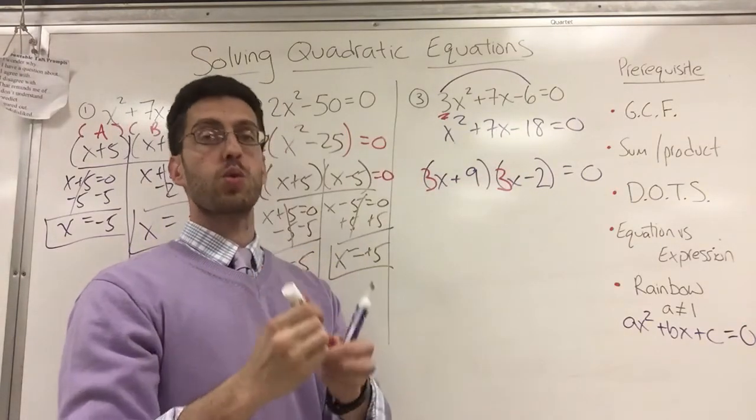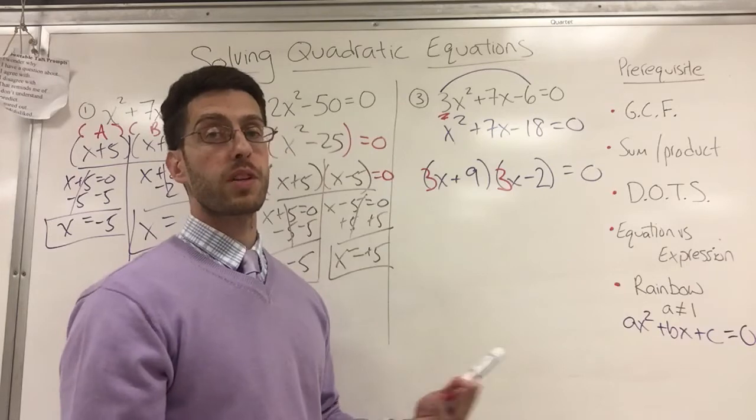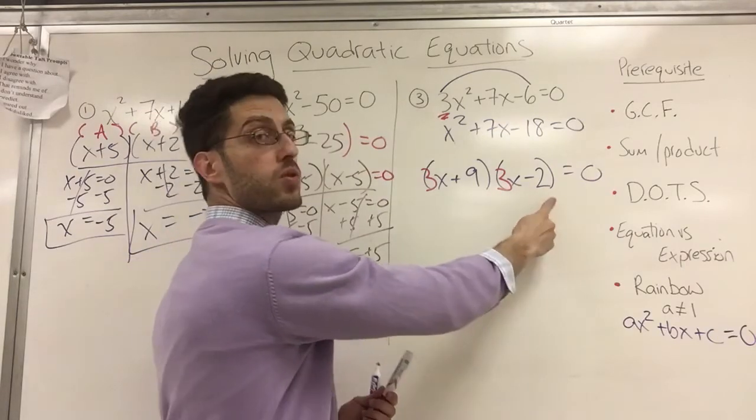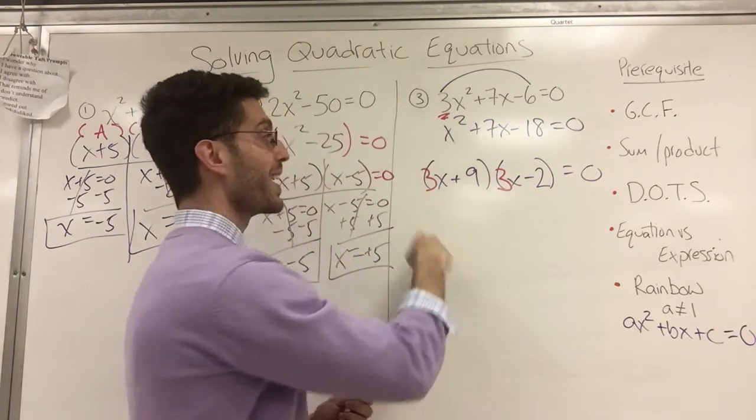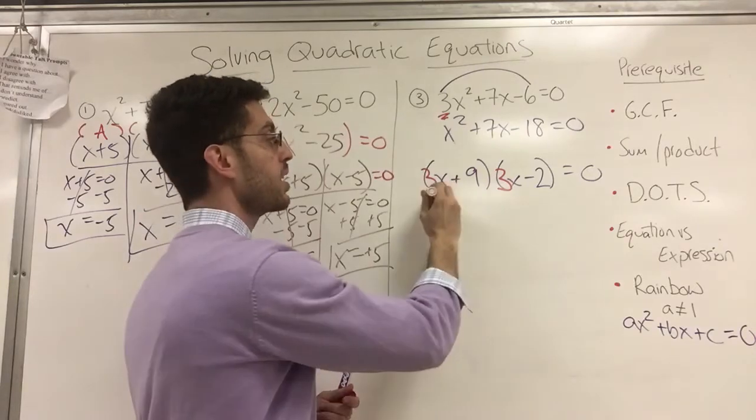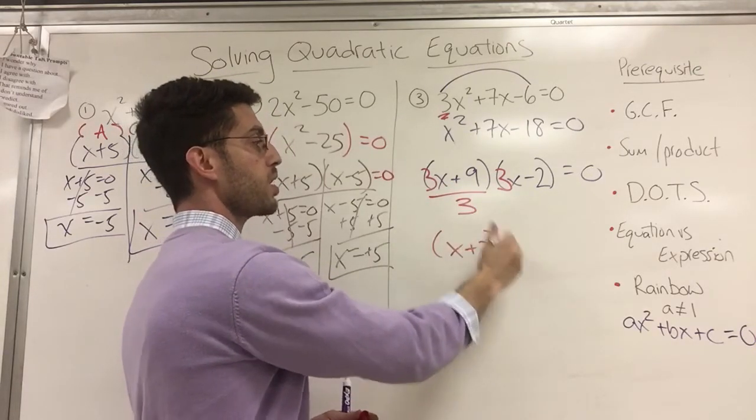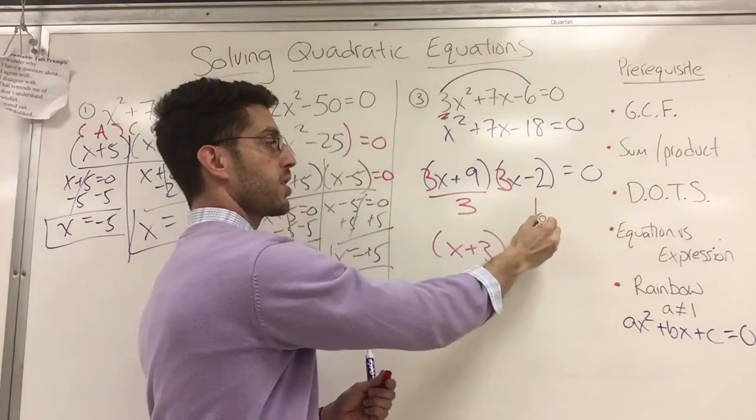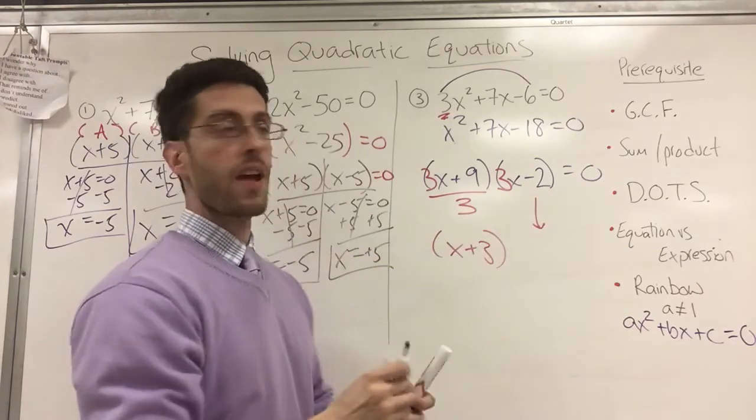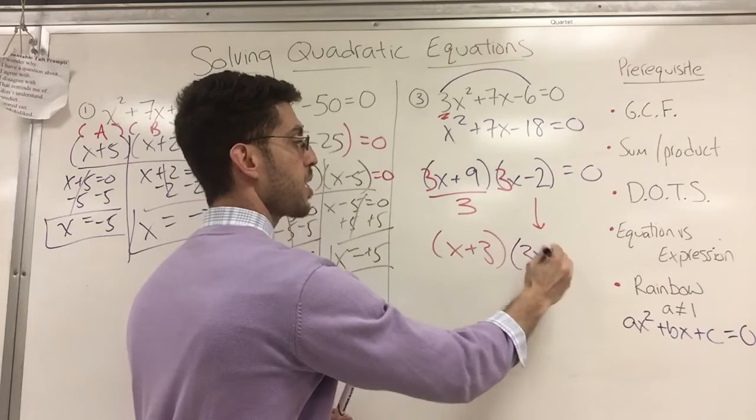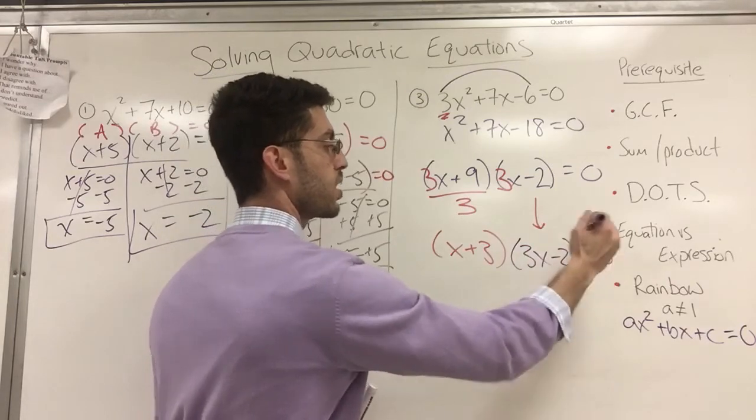But wait, there's more in the rainbow. This three that magically disappeared comes back here and here. Next step in the rainbow is to divide by a GCF. If there is one, is there a number that goes into three and two? No. Is there a number that goes into three and nine? Yes, that's three. So this leaves me with x plus three. This one just drops straight down as 3x minus two equals zero.